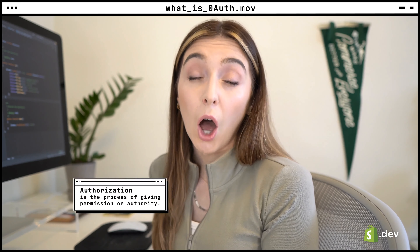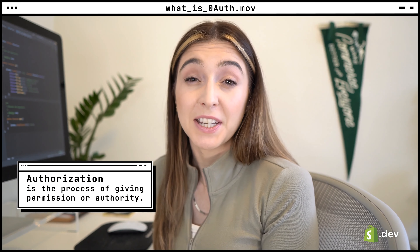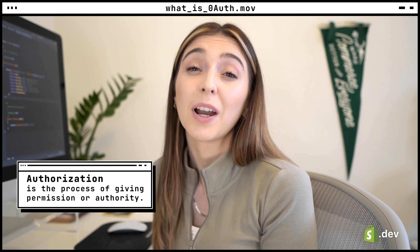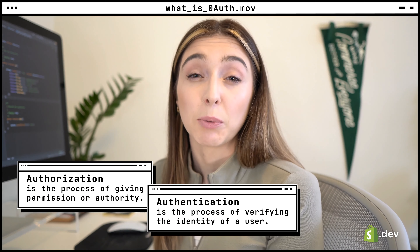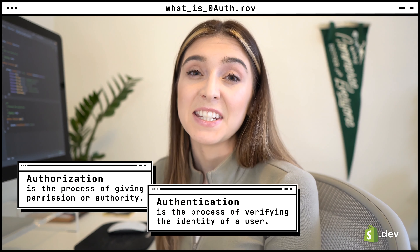So before we go any further, let's make sure we have those definitions correct. Authorization is the process of giving permission or authority. Authentication is the process of verifying the identity of the user. For Shopify apps, an OAuth flow is used so merchants can authorize, or give permission to, Shopify apps to access the merchant's data, like order or product information.